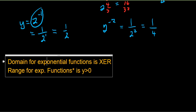Let's jot that down. Exponential functions: domain is x ∈ ℝ, range is y > 0. There's a little asterisk there because we'll talk more about when the range is not this — there are some cases.